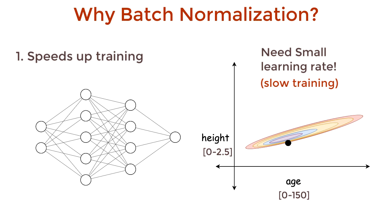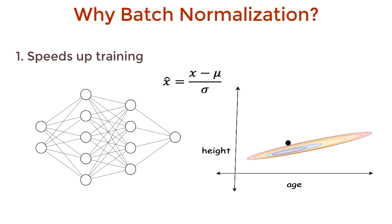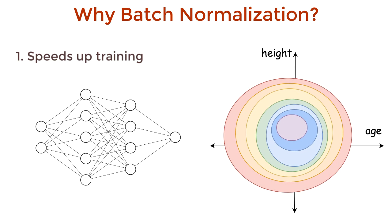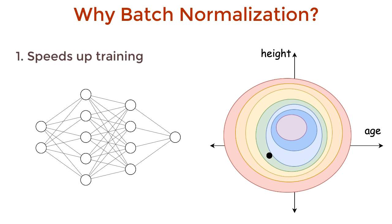Normalizing data helps too. Subtracting the mean and dividing by standard deviation. With this, our data will have a 0 mean and a standard deviation of 1. And our cost function looks more symmetric. We can now use much larger learning rates, getting to the minimum faster. Hence, normalization speeds up training.